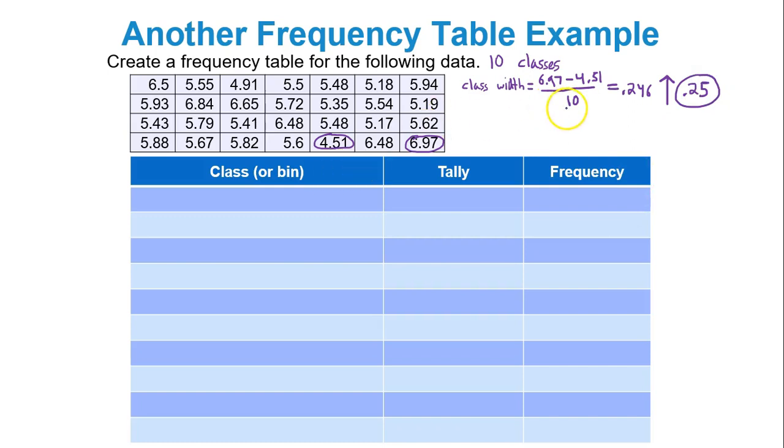Like I said, decimal numbers mean class width should probably be a decimal, honestly. So if you look at your lowest value, it's 4.51. Well, 4.51, pick a number that's just below it that's nice and pretty. Well, I would go with 4.5.